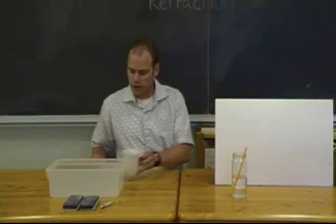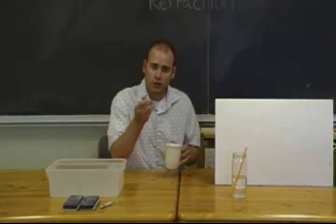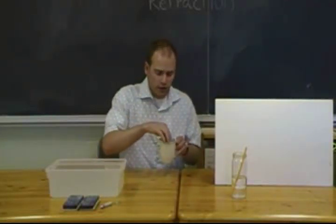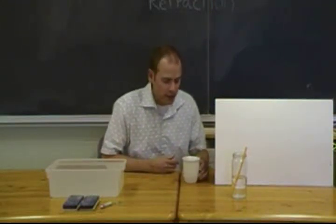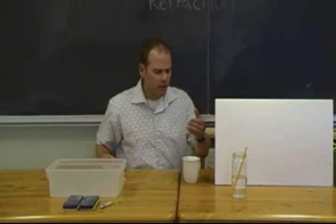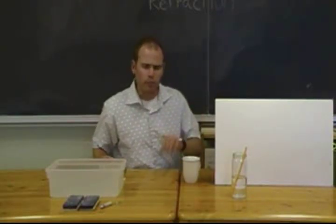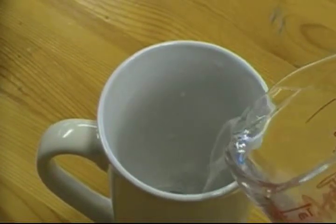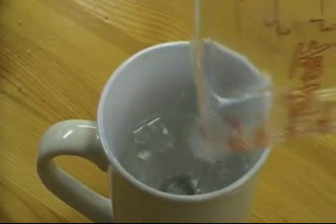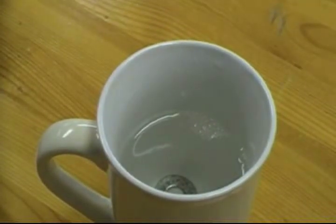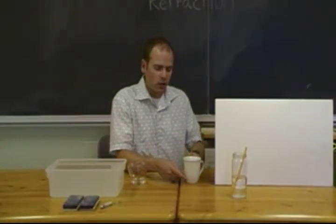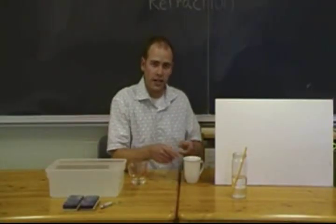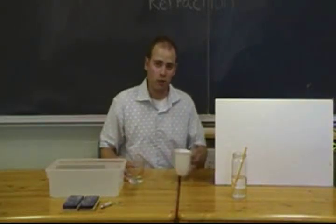Another easy example of refraction uses a tea cup and a washer or coin. Have your students toss it in and move it to one side of the tea cup. Set it on the table and have them move their line of sight so they can barely see it in the cup. Have a partner gently pour water in so the washer doesn't move, and ask them why the coin is now becoming visible. What has to happen to light when it passes from water to air? It refracts — and that is a good example right there.